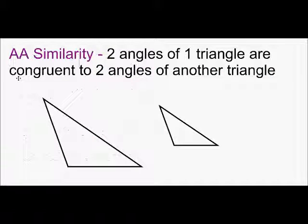Our first type of triangle similarity is AA similarity. AA, remember, is angle-angle.